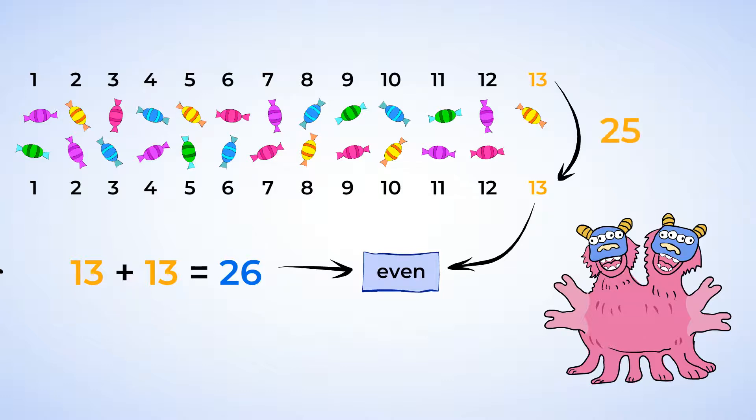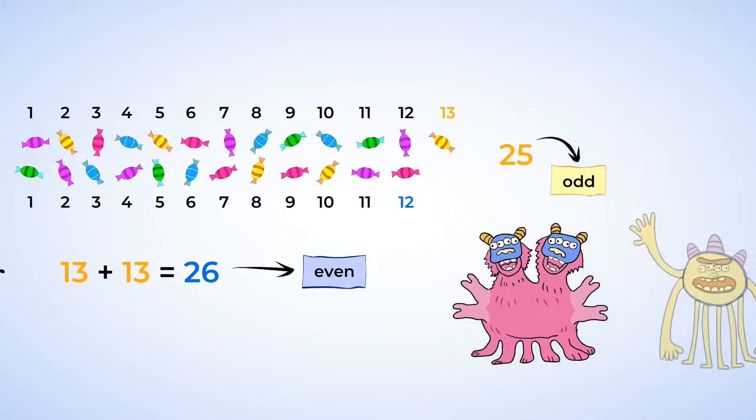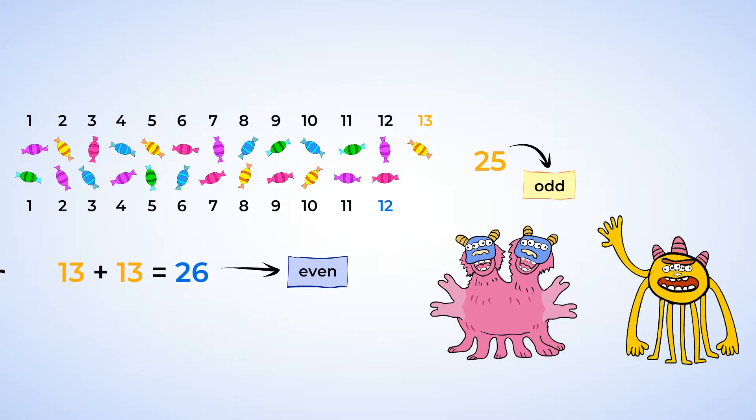Now, that leaves us with just 25 candies. But look what happened to the groups. Now, the lines are not the same length. One group has one more candy than the other. And this means that there are now an odd number of candies. 25 is an odd number. Odd Todd gets the next candy.